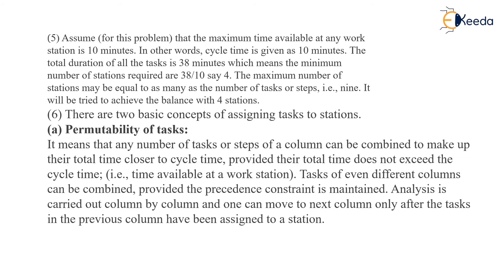There are two basic concepts of assigning tasks to stations. The first is permittability of tasks, which means any number of tasks or steps of a column can be combined to make their total time closer to the cycle time, provided the total time does not exceed the cycle time — that is, the time available at a workstation. Tasks of even different columns can be combined provided the precedence constraint is maintained. Analysis is carried out column by column, and one can move to the next column only after the tasks in the previous column have been assigned to a station.